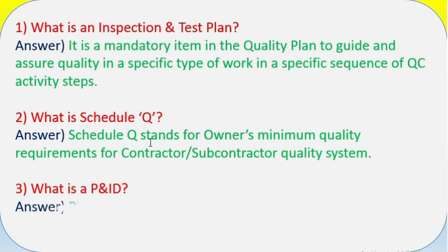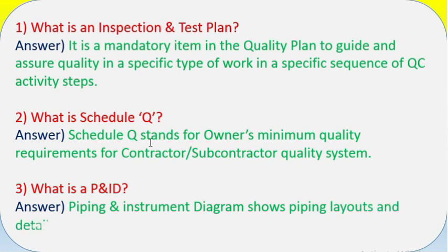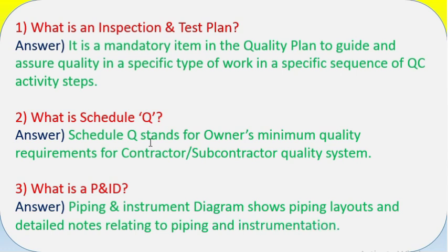Question 2: What is Schedule Q? Answer: Schedule Q stands for owners minimum quality requirements for contractor/subcontractor quality system. Question 3: What is a P&ID? Answer: Piping and Instrument Diagram shows piping layouts and detailed notes relating to piping and instrumentation.